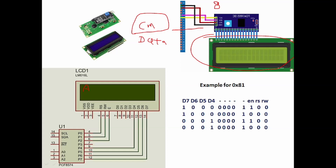Let's say you write command 0x81 on the I2C interface. This device will convert the serial signal into parallel and write it on the parallel lines — you can see 8 parallel lines are there. But in 4-bit mode you cannot write 0x81 directly because 81 is 8-bit data and only 4 bits are available. So you have to write first the upper nibble 8, then the lower nibble 1. You write 8 as 1000 on the 4 pins, then 1 as 0001.